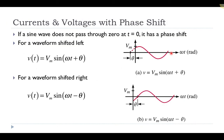What happens if your voltage or current supply is not equal to zero at time t equal to zero? In other words, it's shifted so that at t equal to zero, the voltage is actually partway between its zero value and its maximum value. We call that a phase shift. Everything we're discussing applies to both voltage supplies and current supplies.